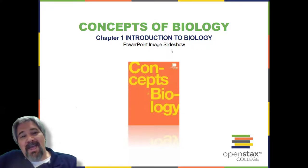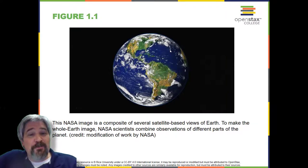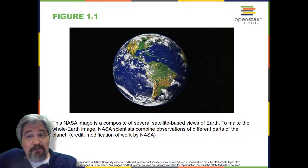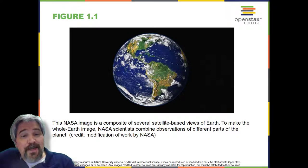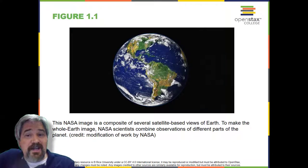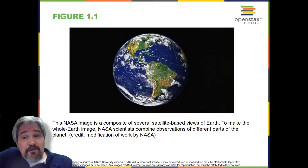Viewed from space, Earth offers few clues about the diversity of life forms that reside there. The first forms of life on Earth are thought to have been microorganisms that existed for billions of years before plants and animals appeared. The mammals, birds, and flowers so familiar to us are relatively recent, originating 130 to 200 million years ago. Humans have inhabited this planet for only the last 2.5 million years, and only in the last 200,000 years have humans started looking like we do today.